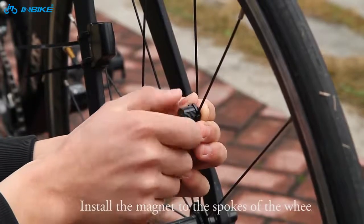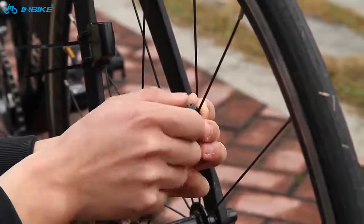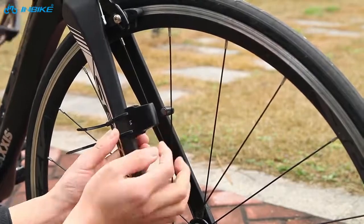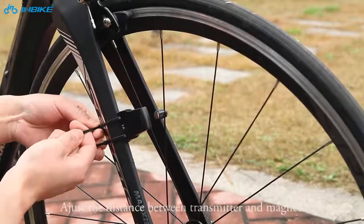Install the magnet to the spokes of the wheel. Adjust the distance between the transmitter and the magnet.